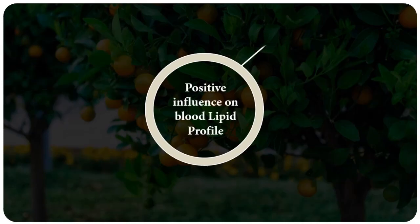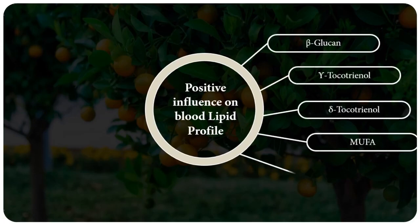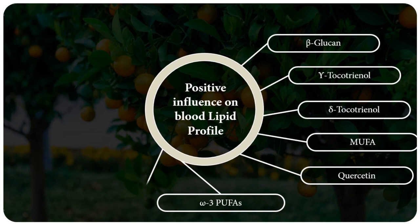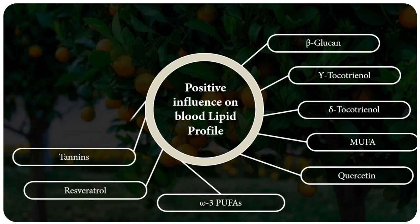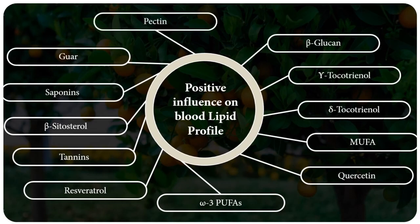Second is classification according to positive influence on blood lipid profile. The examples are beta-glucan, gamma-tocotrienol, monounsaturated fatty acids, quercetin, omega-3 PUFAs, resveratrol, tannins, beta-sitosterol, saponins, guar and pectin.